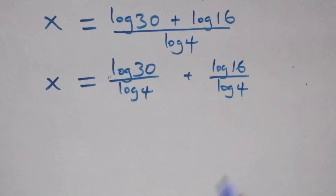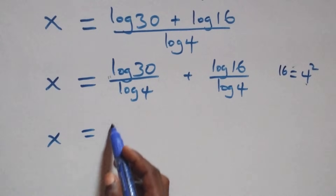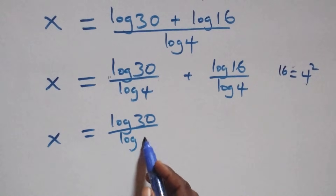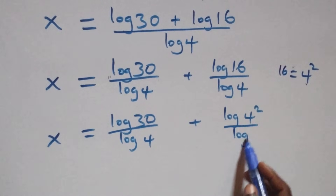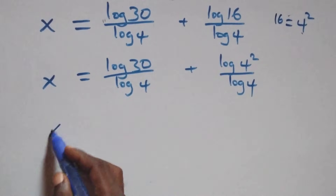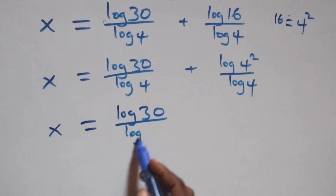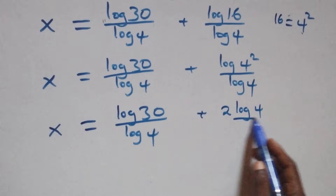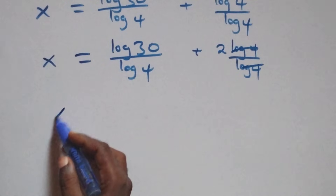We can rewrite 16 as 4 times 4, which is 4 squared. So we have x equals log 30 over log 4 plus log 4 squared over log 4. Applying the power rule of logarithm, this becomes x equals log 30 over log 4 plus 2 log 4 over log 4. The log 4 terms cancel, giving plus 2.